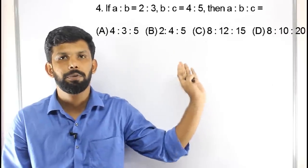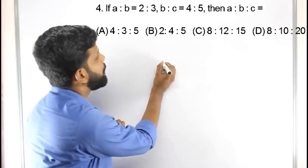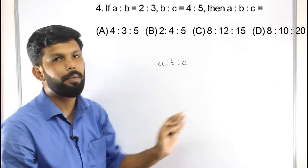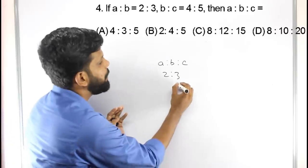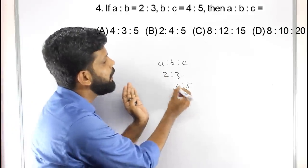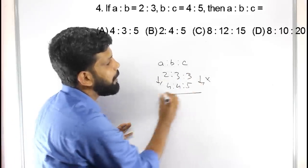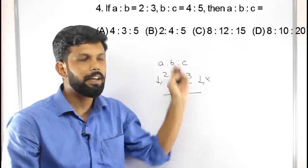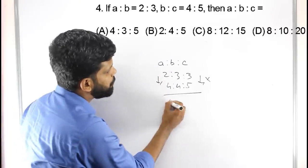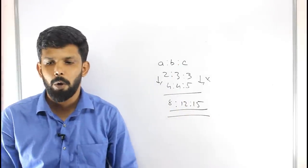The fourth question: if a is to b equals 2 is to 3, and b is to c equals 4 is to 5, then find a:b:c. We make b common: a:b = 2:3, multiply by 4 gives 8:12; b:c = 4:5, multiply by 3 gives 12:15. So a:b:c = 8:12:15. Option C is the right answer.